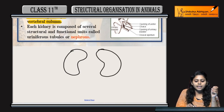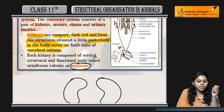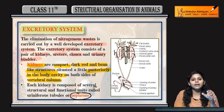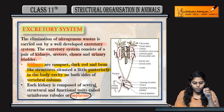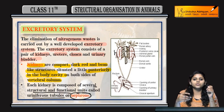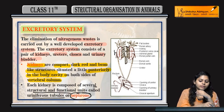Vertebral column ke dono sides mein bean-shaped kidney-like structure hooga. Jho kidney hai, that is composed of nephrons. Nephrons kya hoota hai? Structural and functional unit of kidney, jo excretion mein help kerti hai.